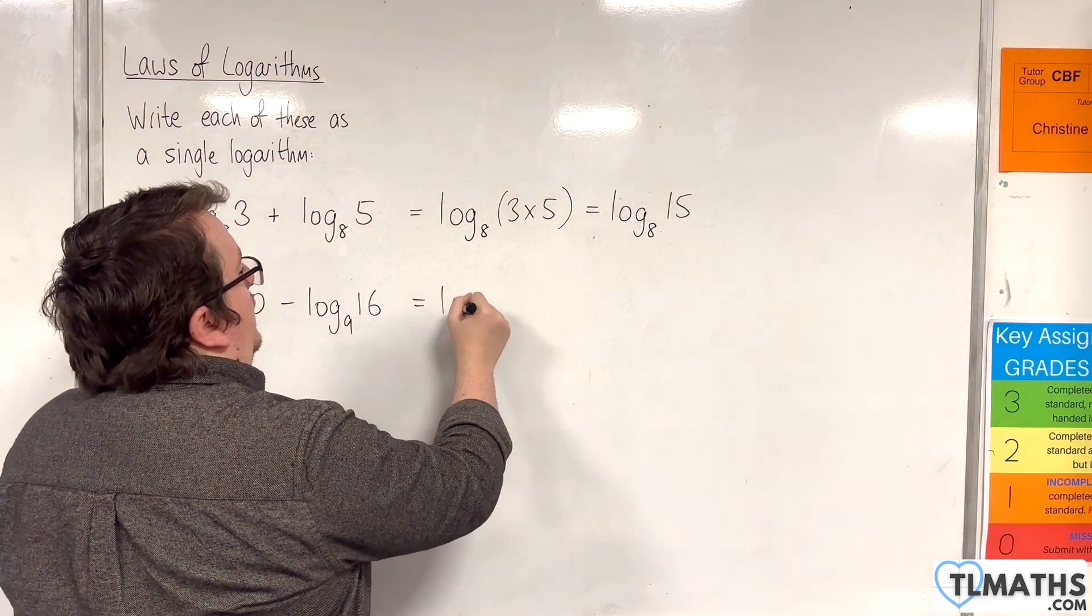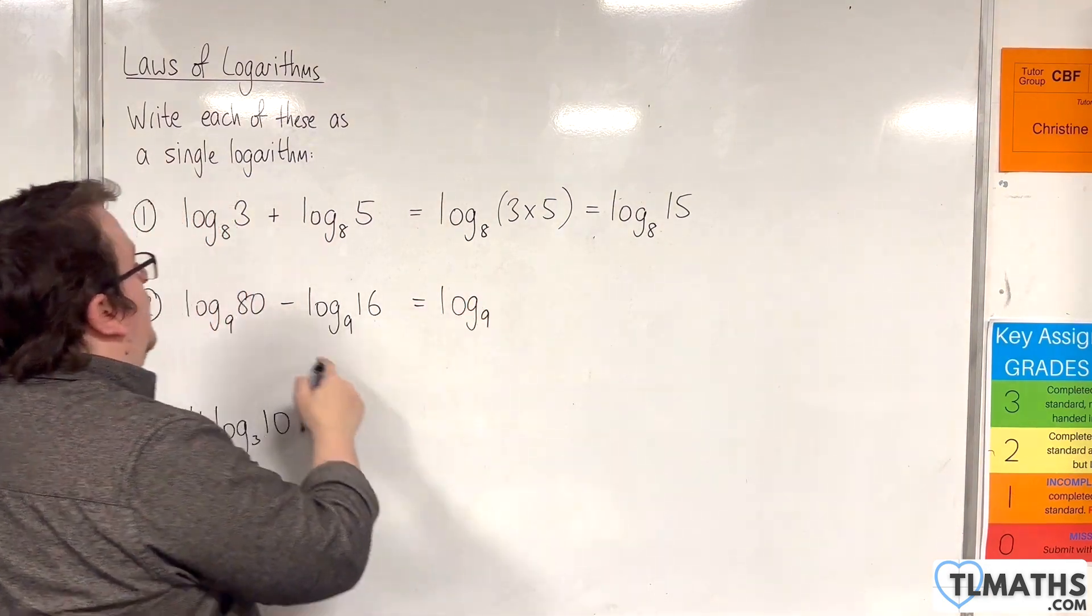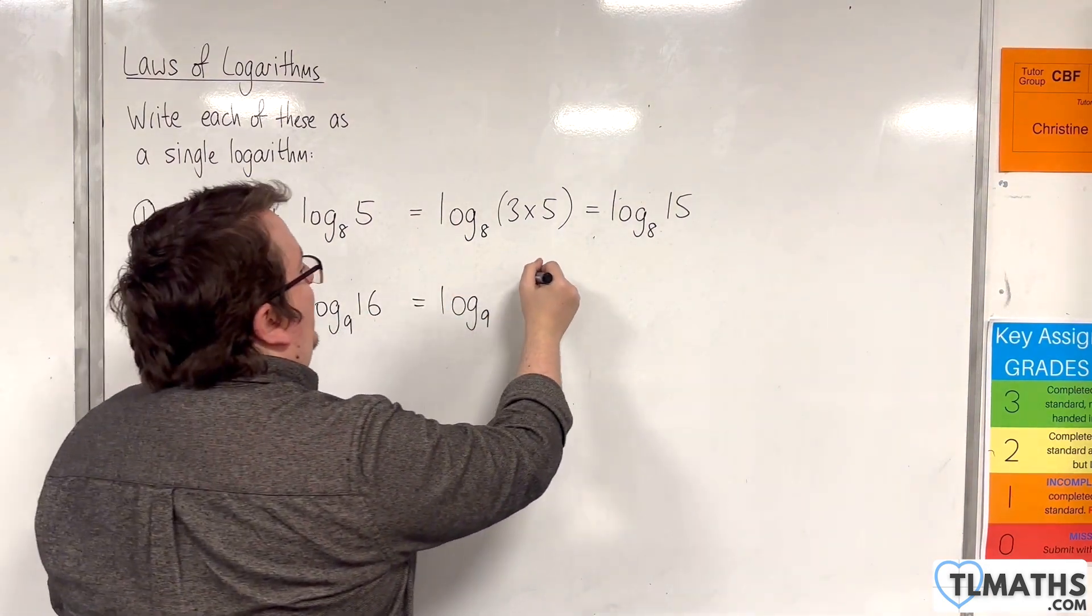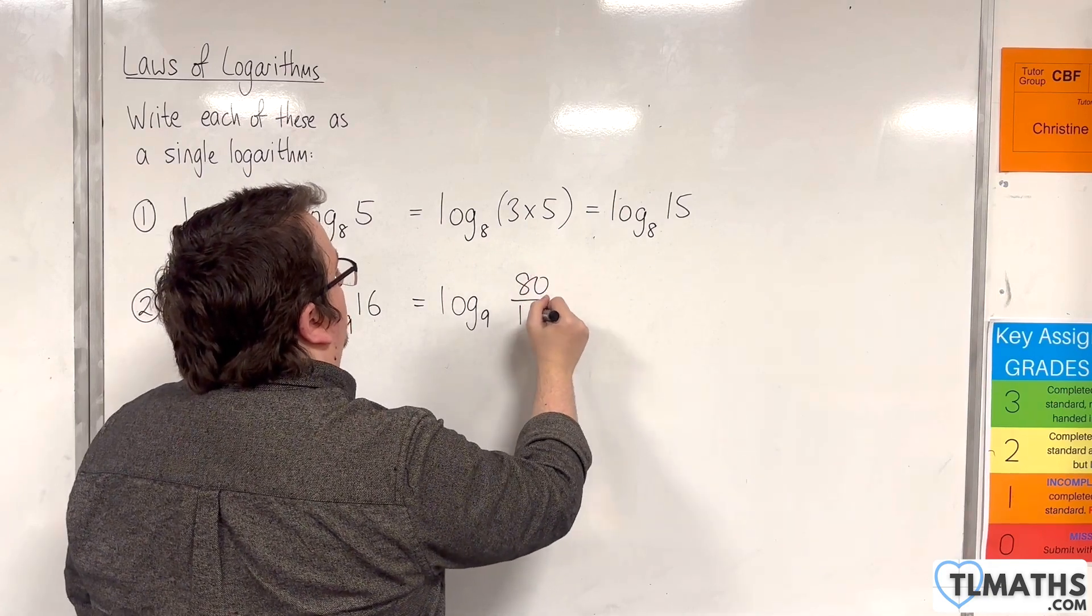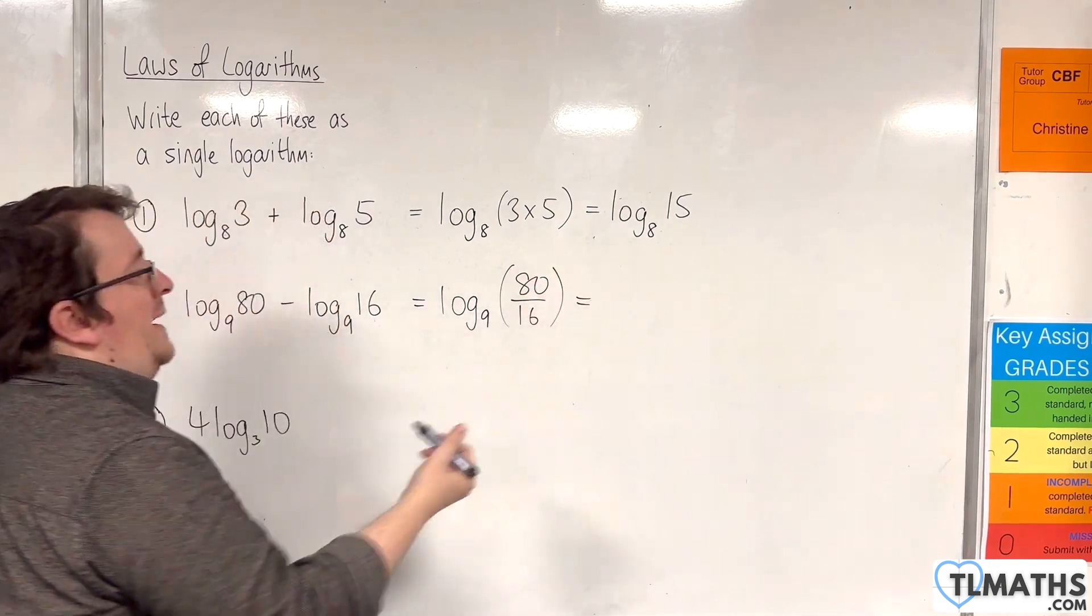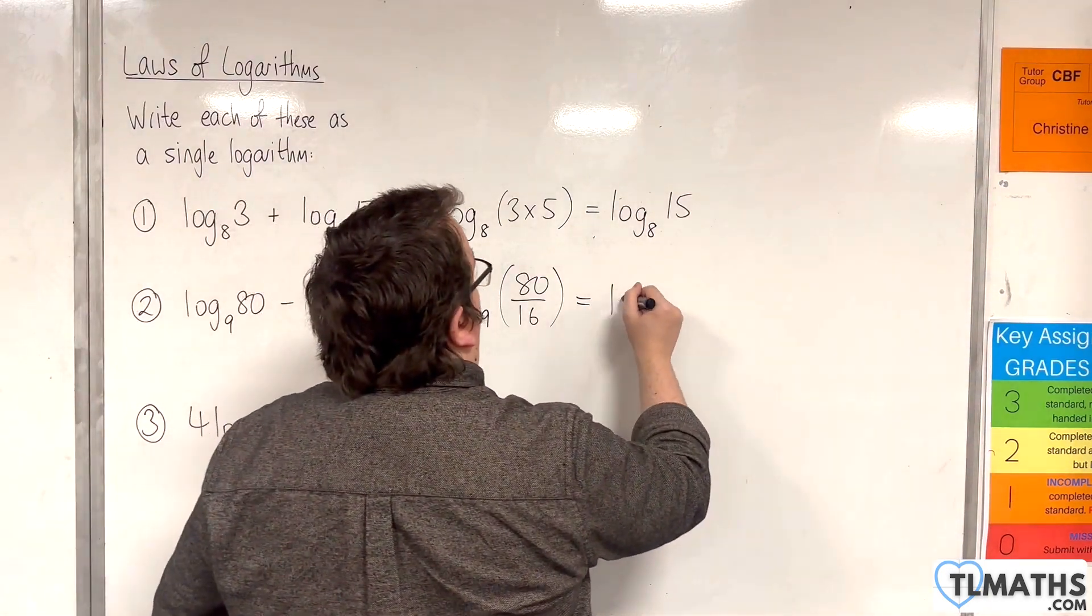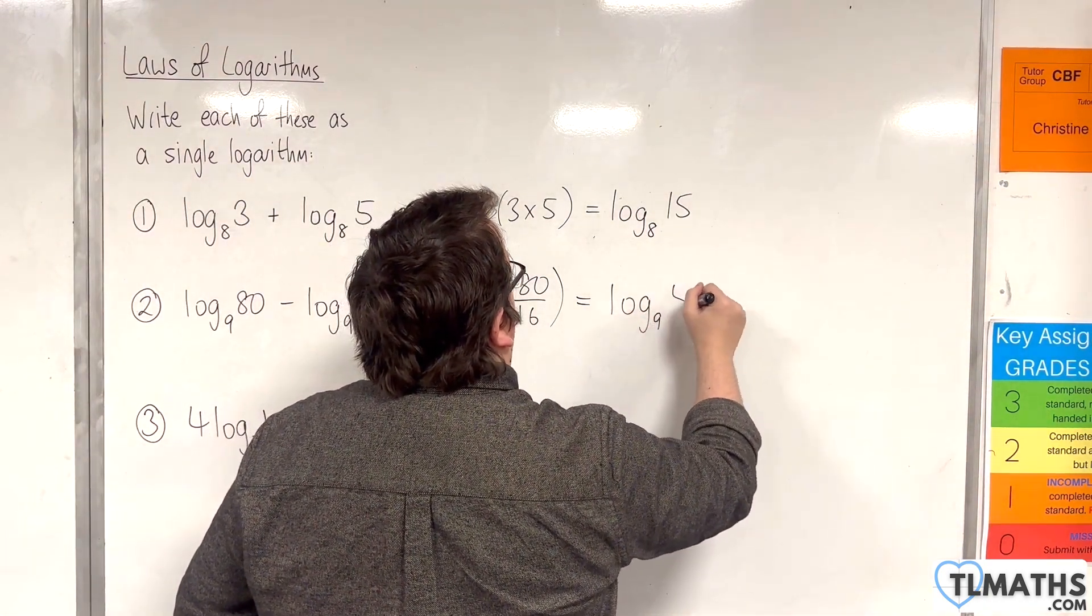So this would be log base 9 of 80 over 16. Now, 80 divided by 16 is 5. So this would be log base 9 of 5.